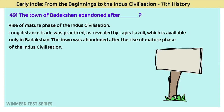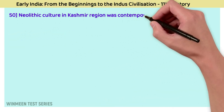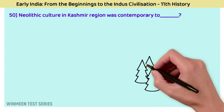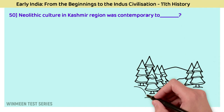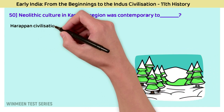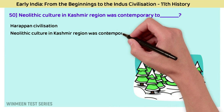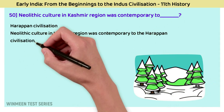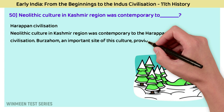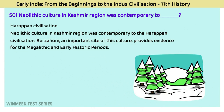Question 50: Neolithic culture in the Kashmir region was contemporary to? The answer is the Harappan civilization. Burzahom is an important site of this culture, providing evidence for the megalithic and early historic periods.